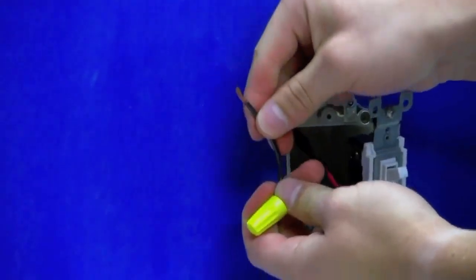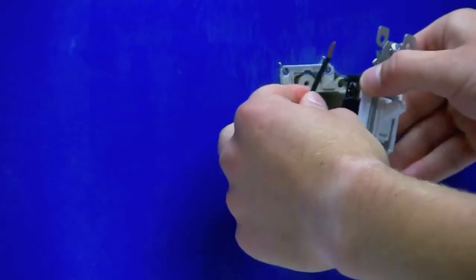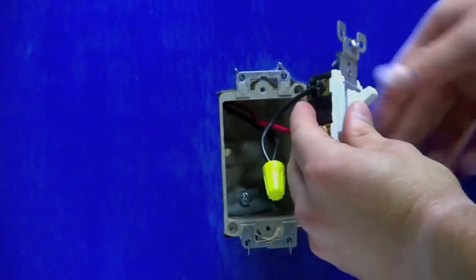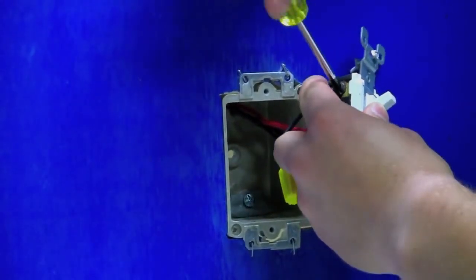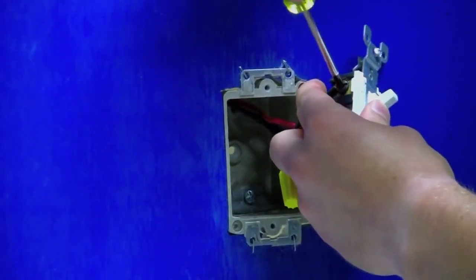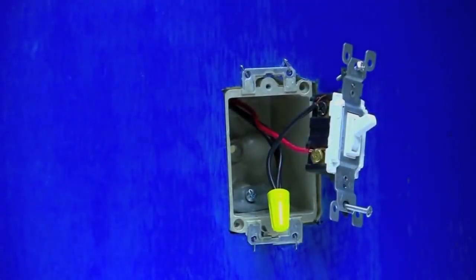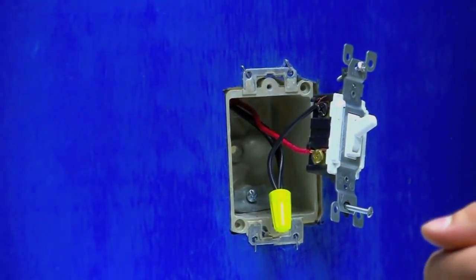Then run the bare end of the jumper wire back to the common terminal. Once you have that completed you can insert the three-way switch back into the wall.